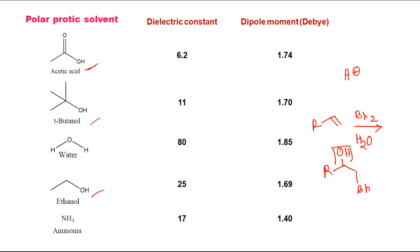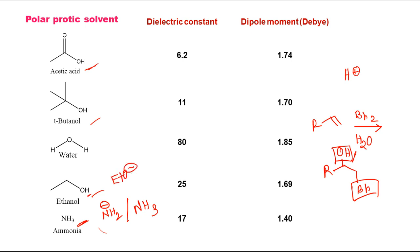In the bromine-water reaction with an alkene, an O-H group becomes attached to the C=C double bond, and the double bond is broken, giving net addition of O-H and Br. The O-H comes from water, so water is not only the solvent but also directly participates in the reaction. Another example: when conjugate bases are used — ammonia's conjugate base is NH₂⁻, and ethanol's conjugate base is EtO⁻ — the corresponding protic solvent can be used.